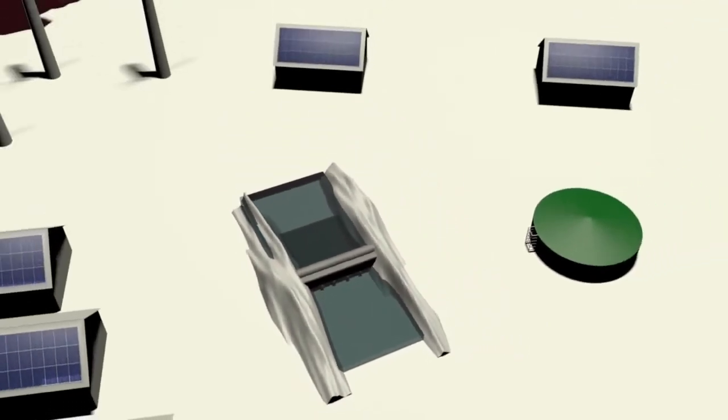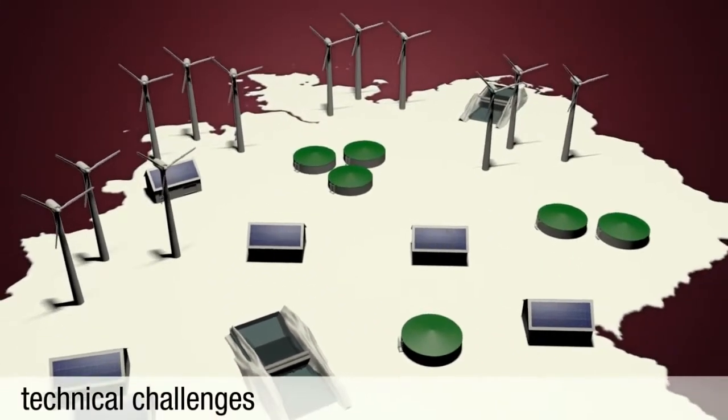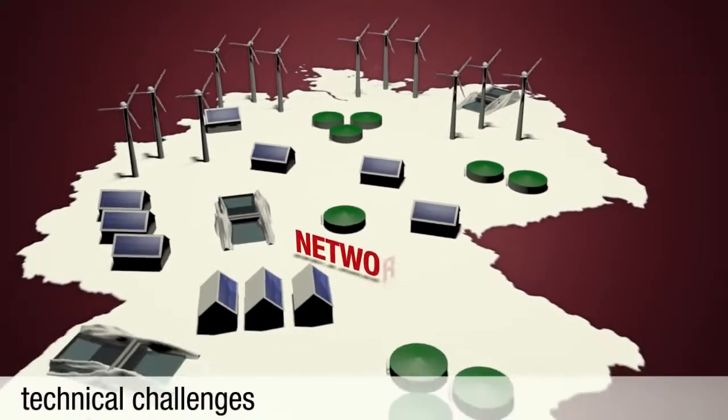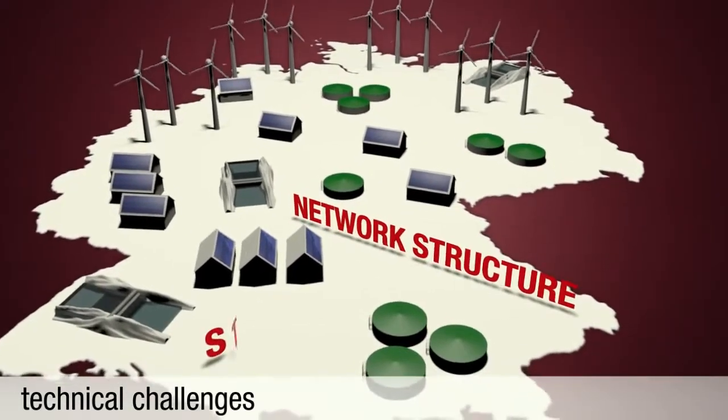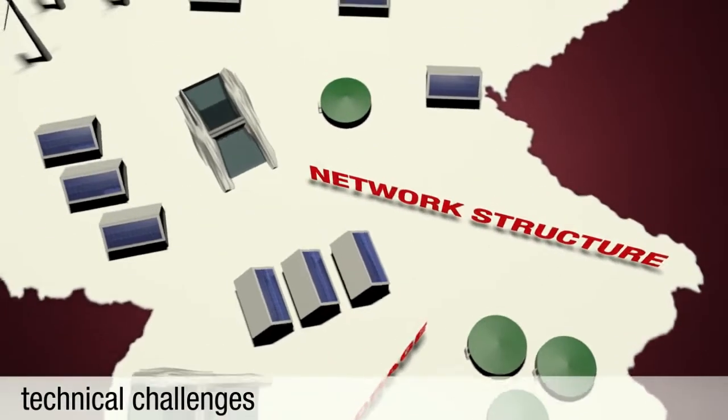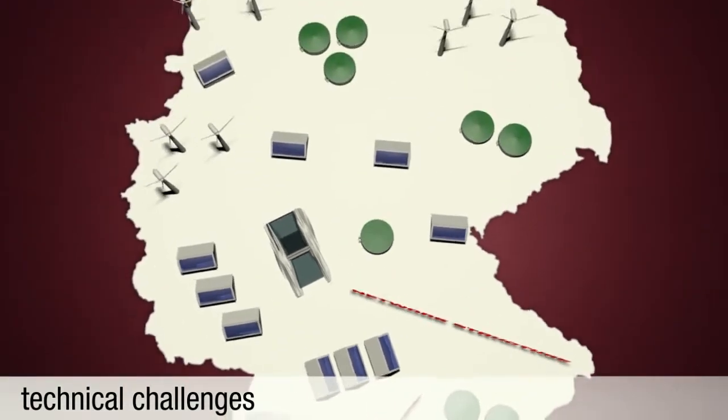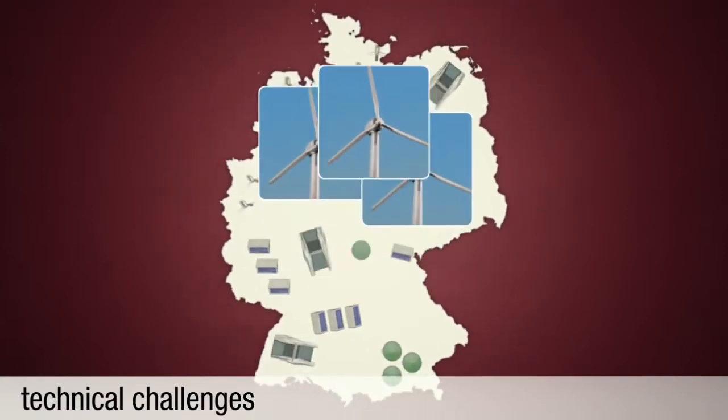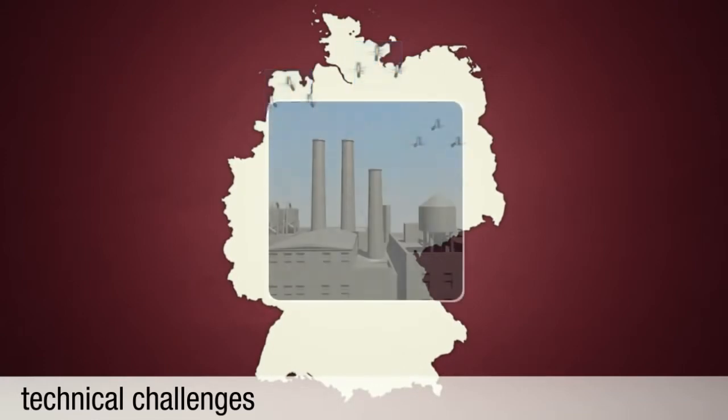The reliable and constant supply of green electricity is a major technical challenge. Two points are particularly challenging: the structure of power grids and the storage of power. In Germany, for example, energy production and consumption are located in different regions. The largest supplier of renewable electricity, wind power plants, are mostly located in the north due to good climate conditions.